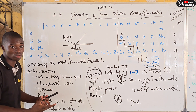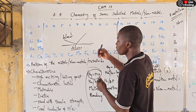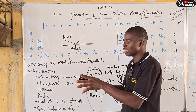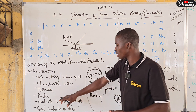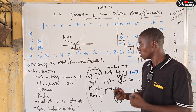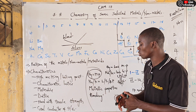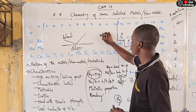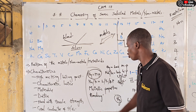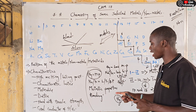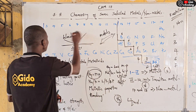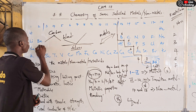Metals are also malleable — they can be beaten into different shapes. They are also ductile — they can be drawn into wires. They have tensile strength, meaning they are hard and strong. And the most important characteristic: all metals are good conductors of heat and electricity. However, there is one non-metal that can conduct electricity, and that is carbon.